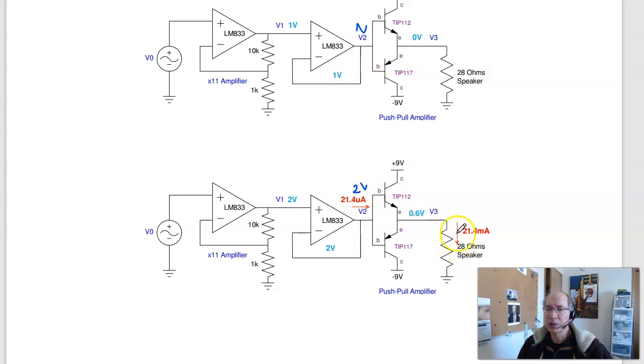0.6 volts at 28 ohms becomes 21 milliamps. Where that comes from is most of it comes from here. Just a little bit comes from the base. So this is the output, the emitter current, divided by beta plus 1. And this guy right here is just beta over beta plus 1 times the emitter current. Basically the same.